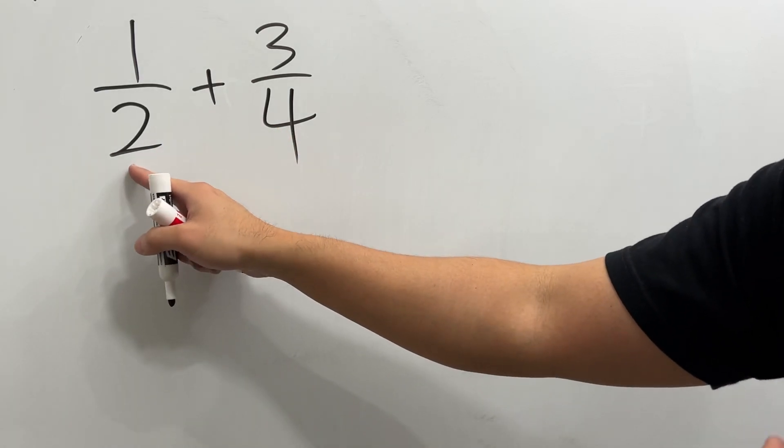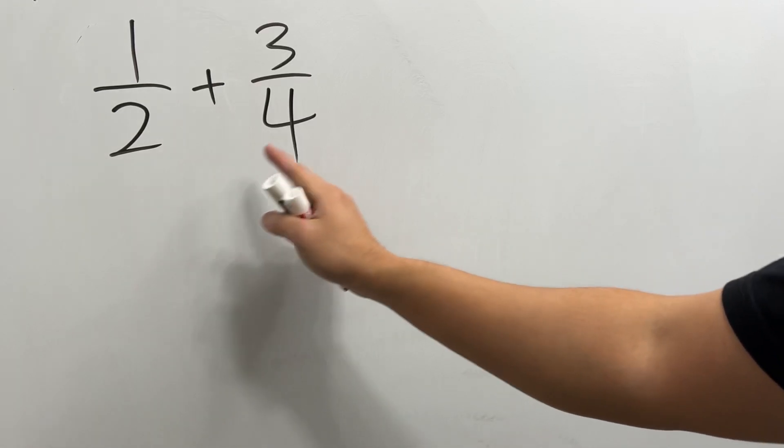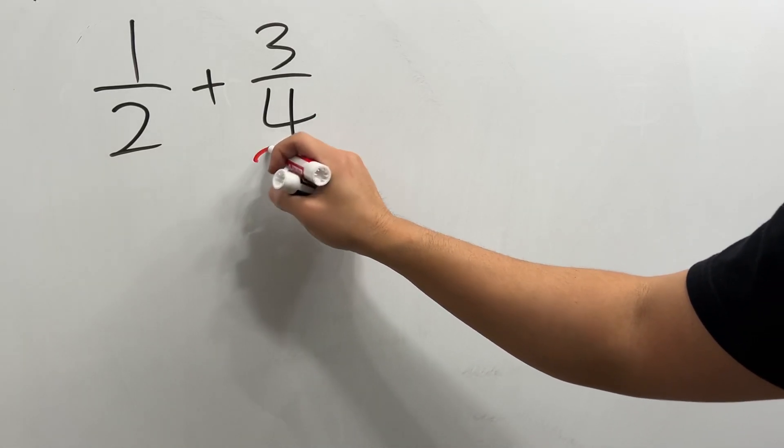For 2, this is just 1 times 2, so we cannot do too much. But for 4, we can write it as 2 times 2.